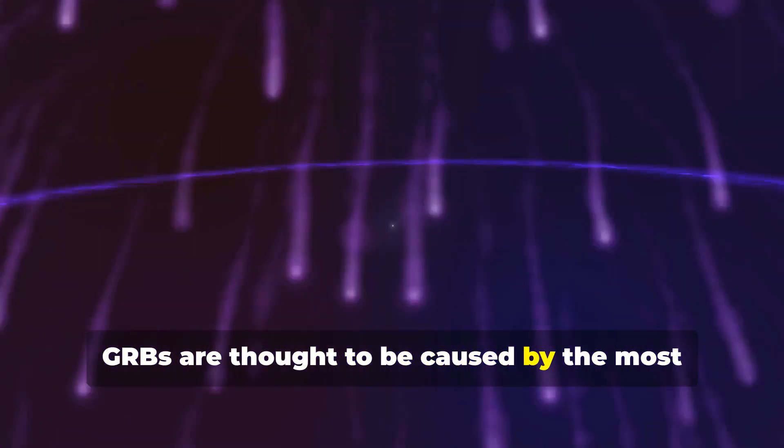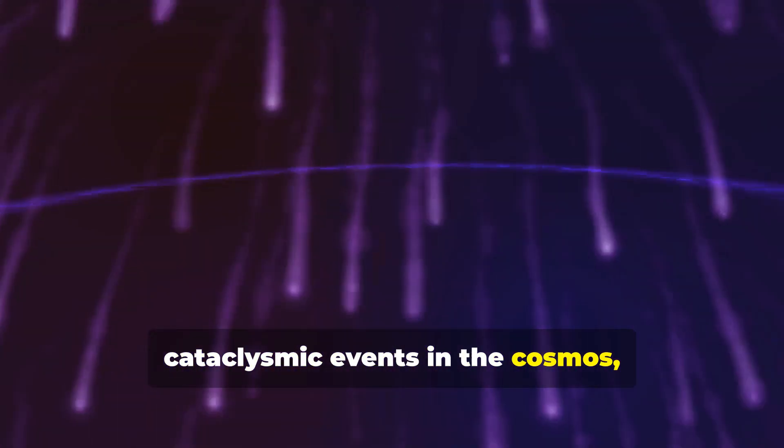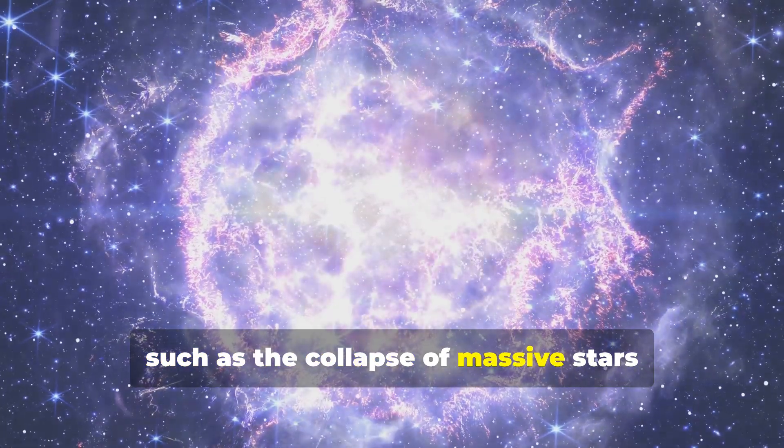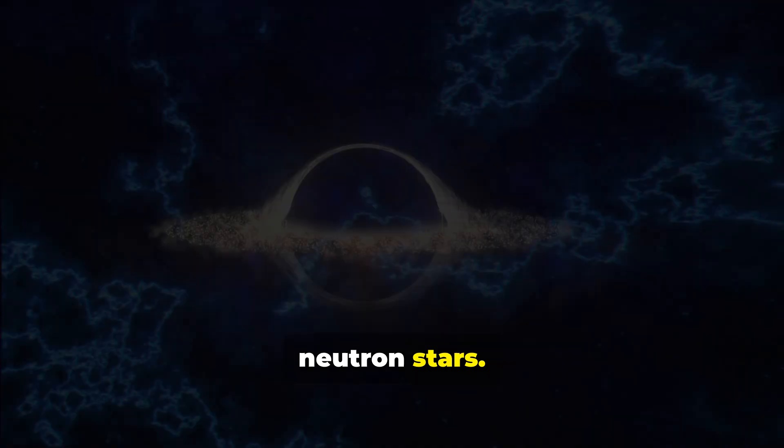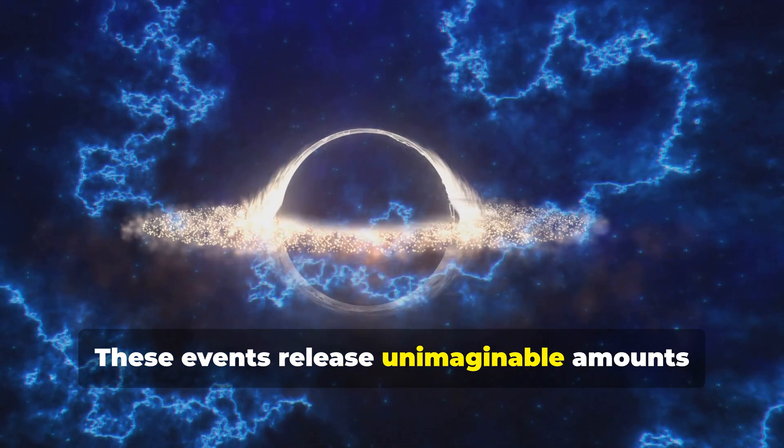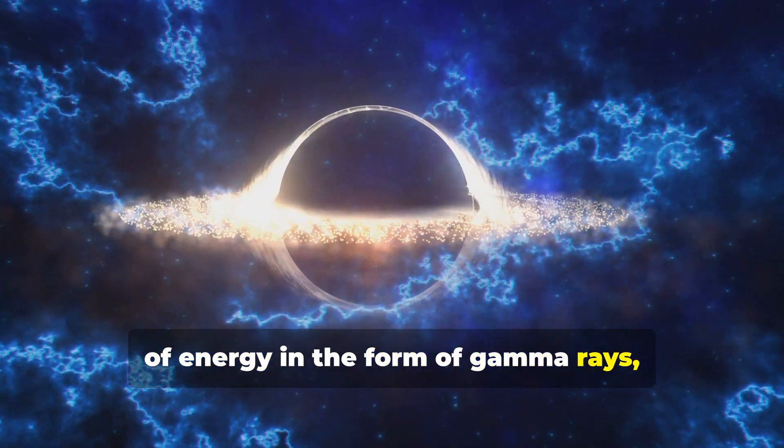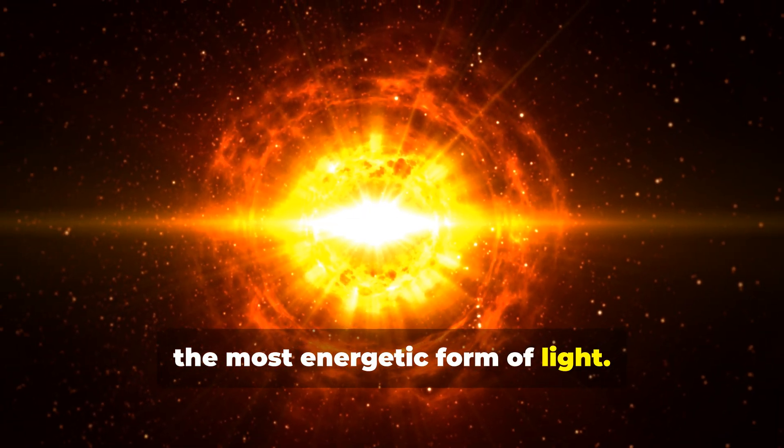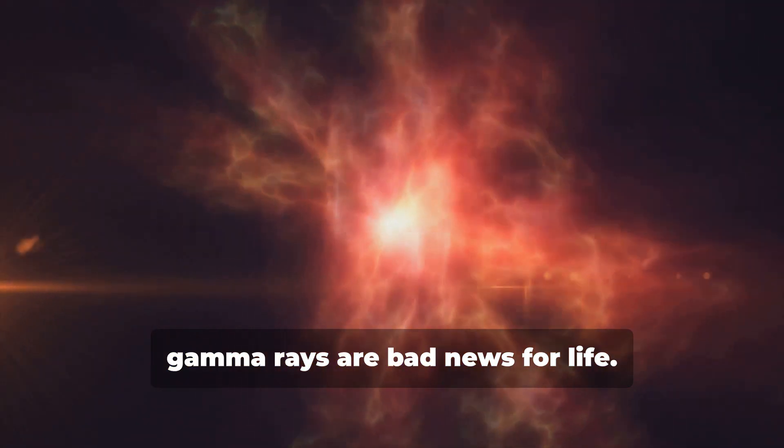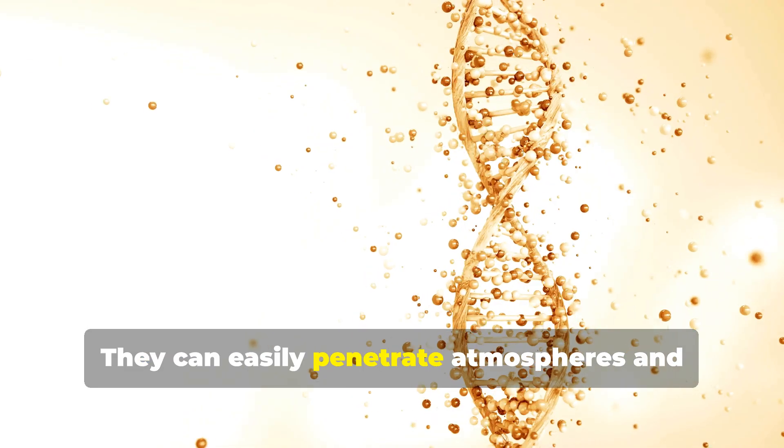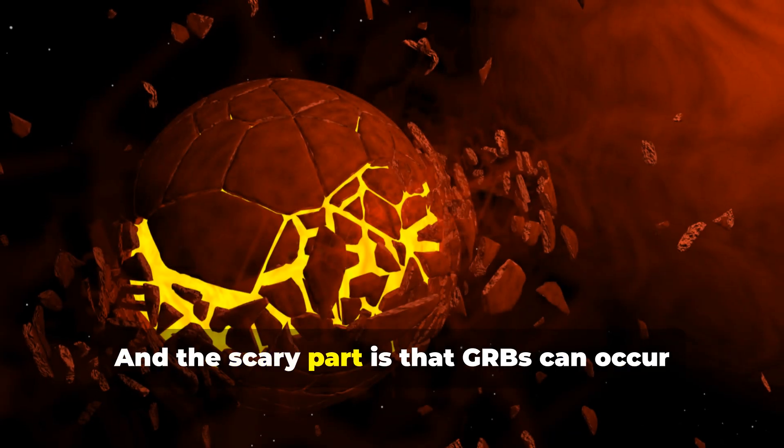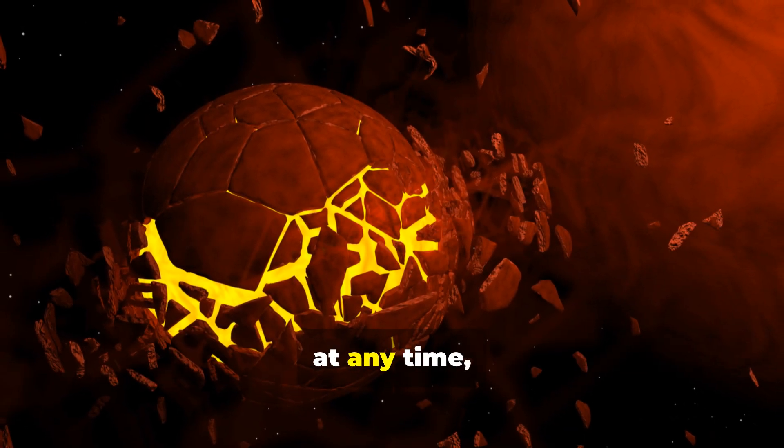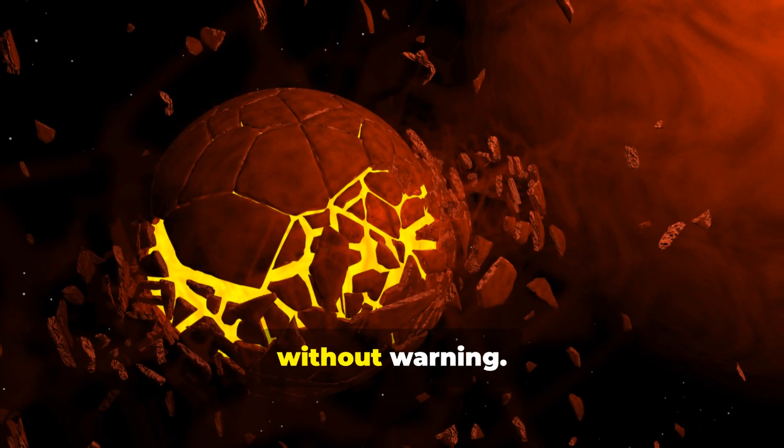GRBs are thought to be caused by the most cataclysmic events in the cosmos, such as the collapse of massive stars into black holes or the collision of neutron stars. These events release unimaginable amounts of energy in the form of gamma rays, the most energetic form of light. Now, gamma rays are bad news for life. They can easily penetrate atmospheres and wreak havoc on DNA, potentially sterilizing entire planets. And the scary part is that GRBs can occur at any time, in any direction, without warning.